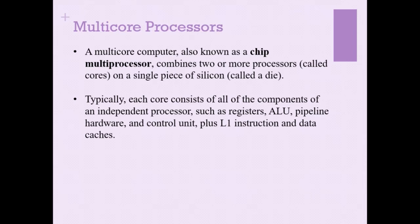We are going to discuss the next topic in our module: multi-core processors. We have heard about dual-core, quad-core, or octa-core processors. By definition, a multi-core computer, also known as a chip multi-processor, has a combination of two or more processors on a single piece of silicon — that is, multiple cores on a single integrated circuit.